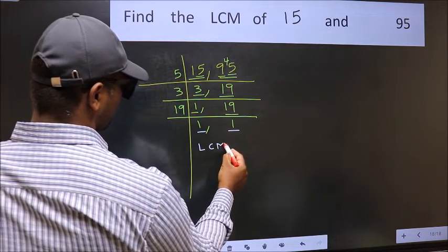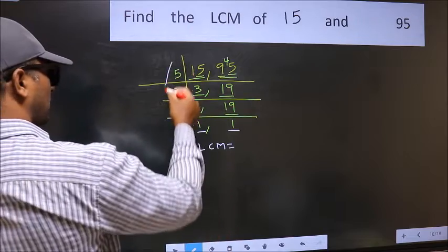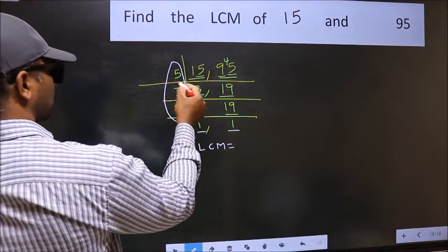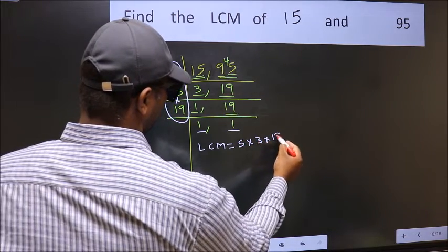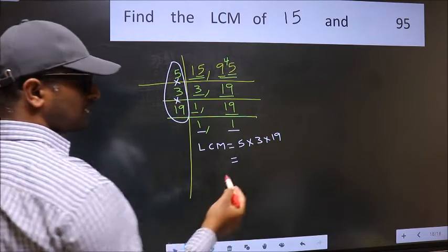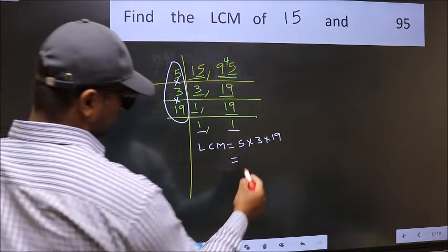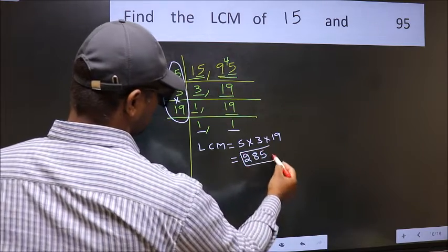Our LCM is the product of these numbers. That is 5 into 3 into 19. When we multiply these numbers, we get 285 as our LCM.